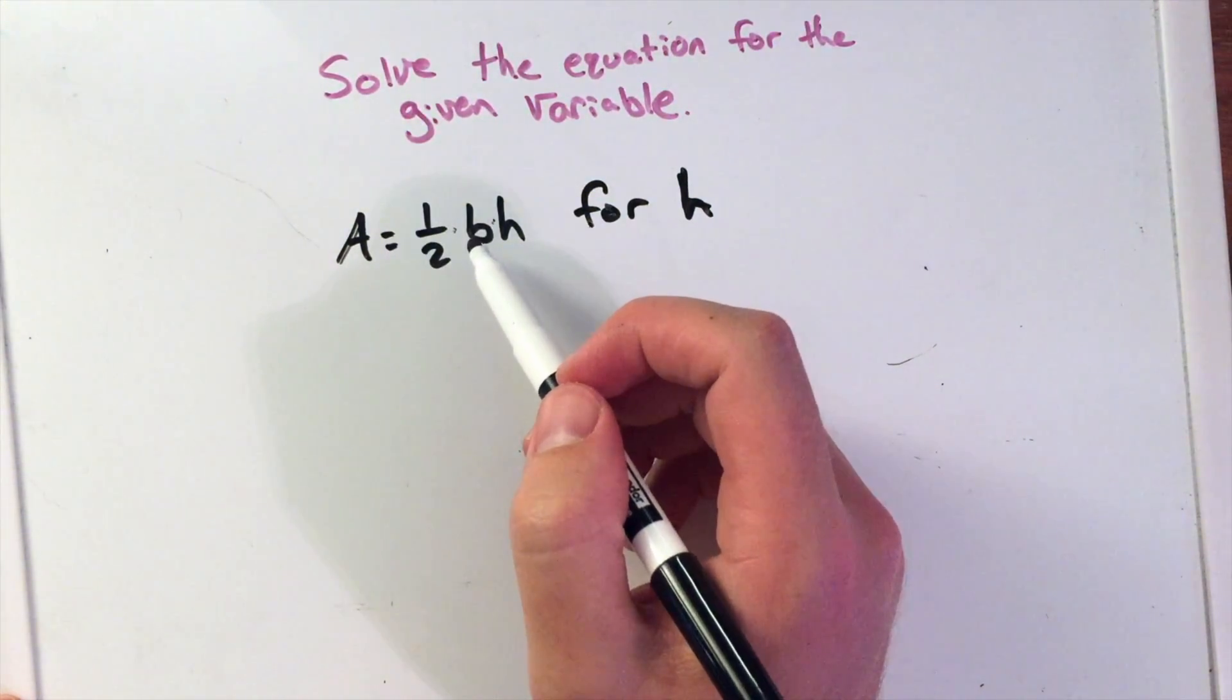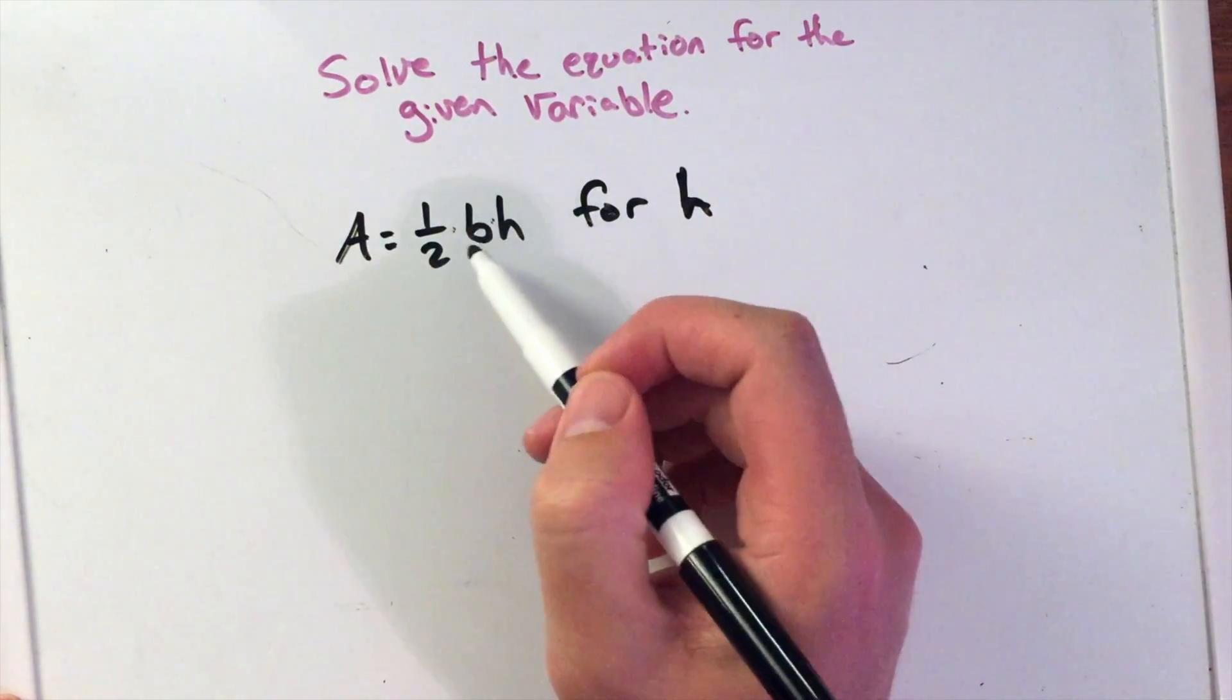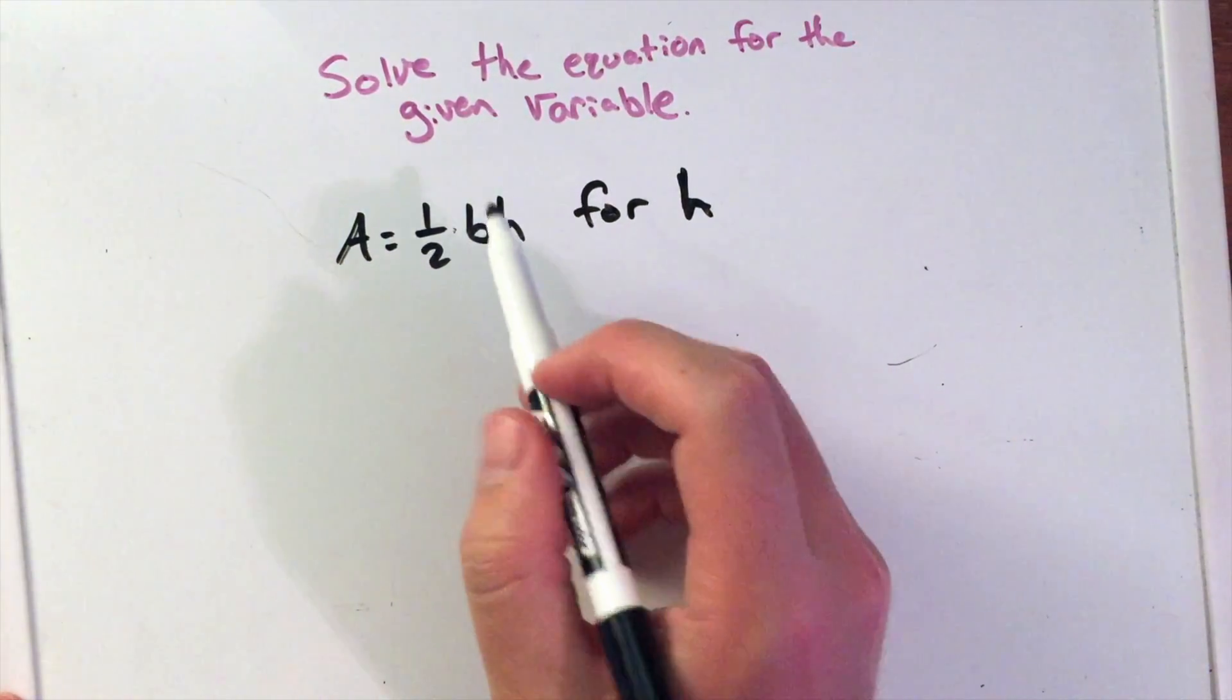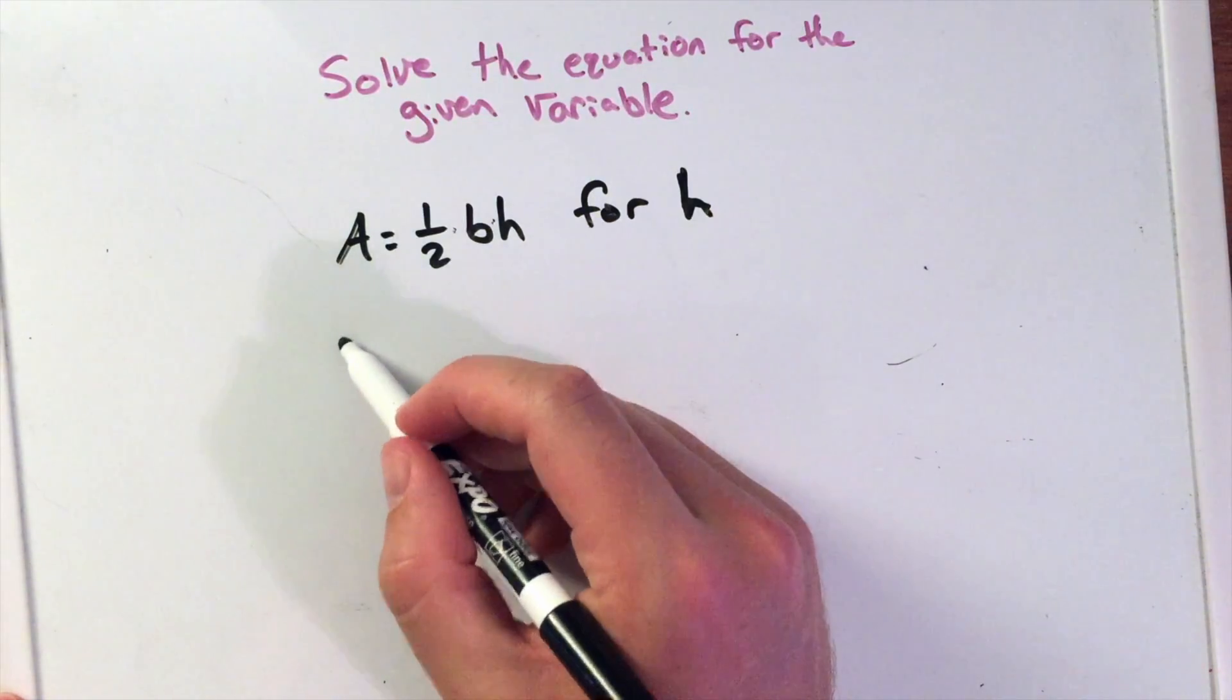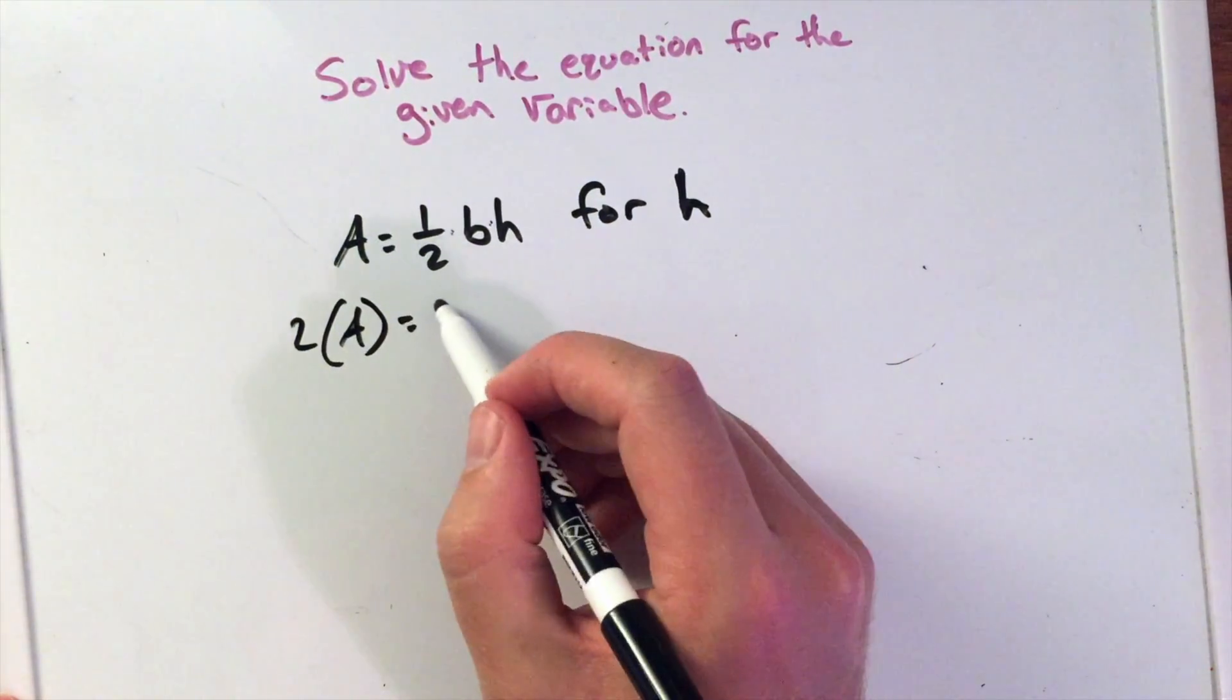We know if we multiply, we can divide by 1/2 on both sides, which is the same thing as multiplying by 2. So I'm going to rewrite this and multiply both sides by 2.